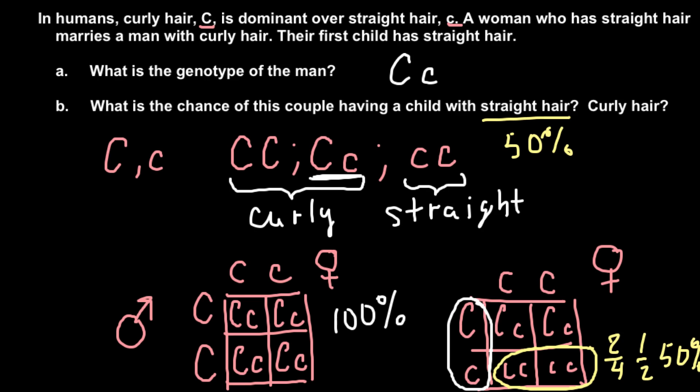And as you see, another 50% would produce curly hair, and this is going to be the answer for the second question.